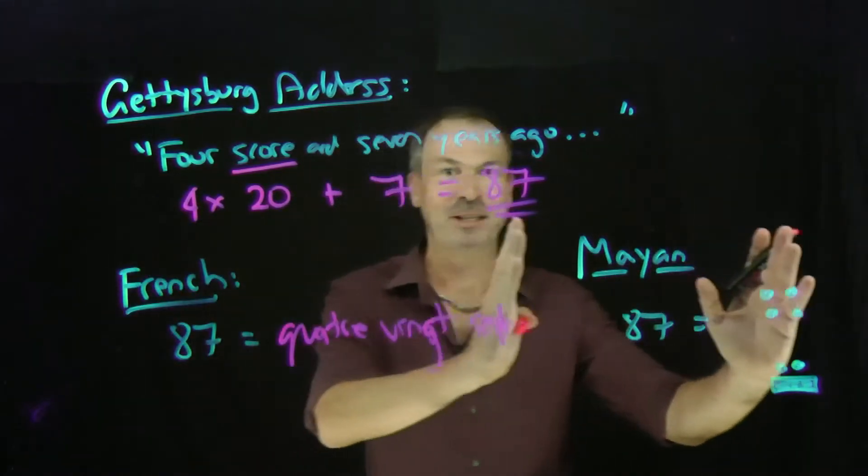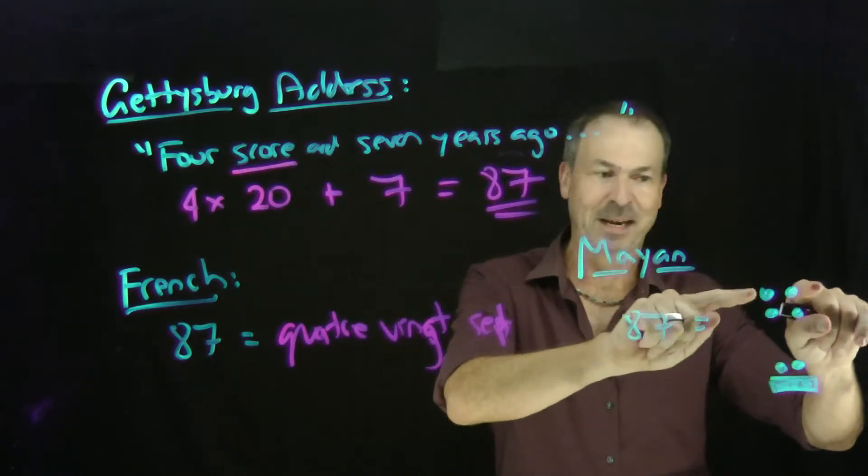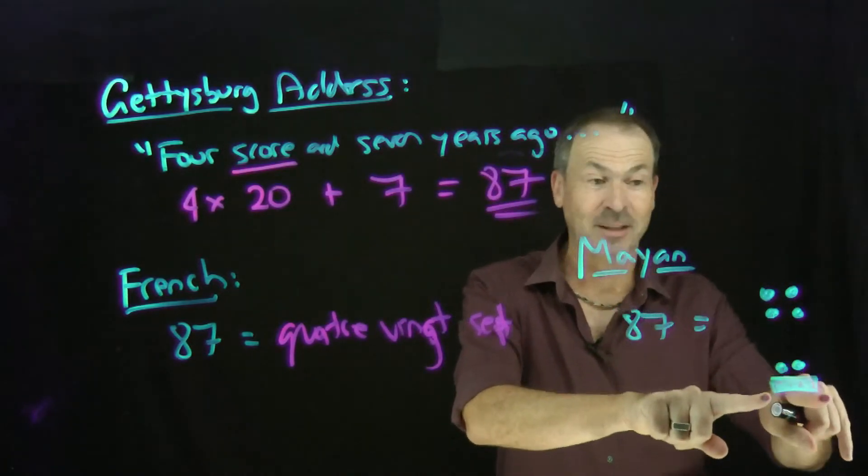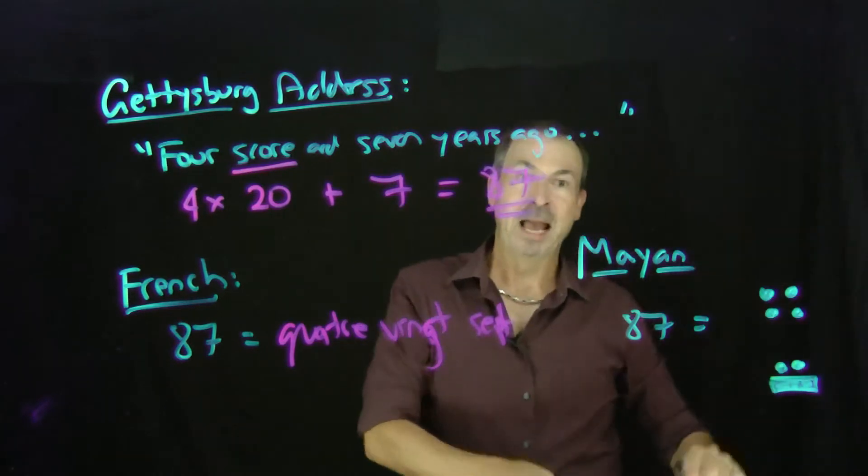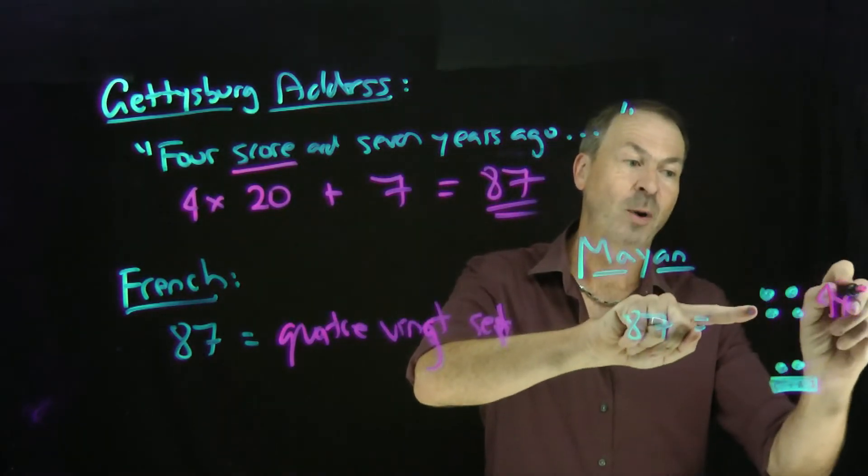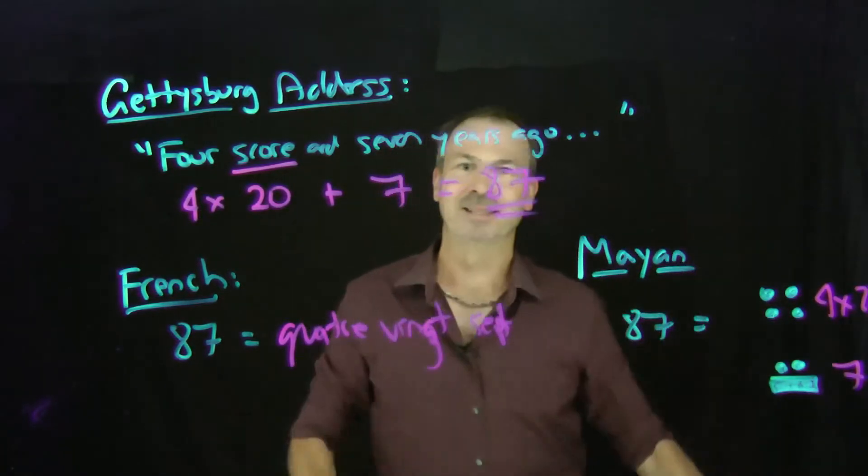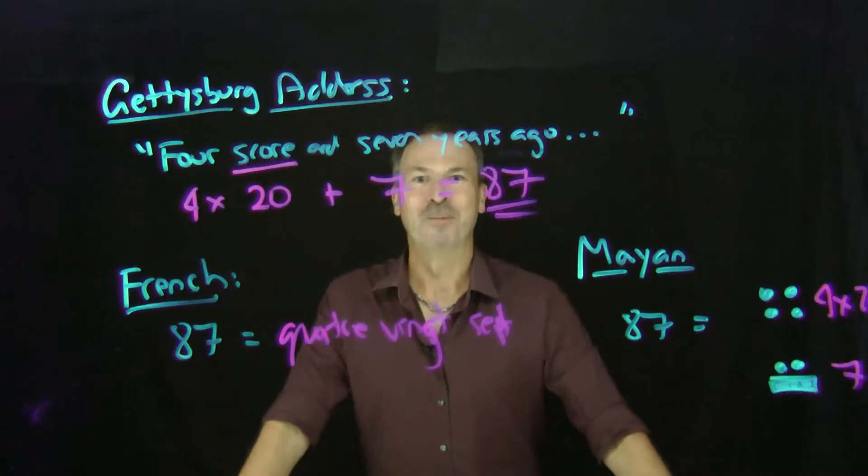And it's just like what the Mayan cultures did millennia ago. They wrote their numbers with dots representing one, bars representing five dots, and they wrote their numbers vertically, but they did it in a base 20 way. Here's four dots that represent four twenties and an extra seven dots. There's the number 87 in the Mayan system. Base 20.